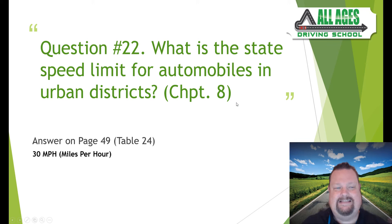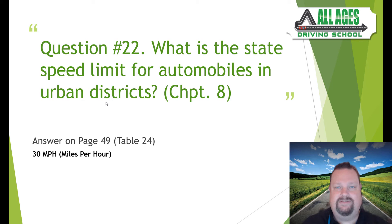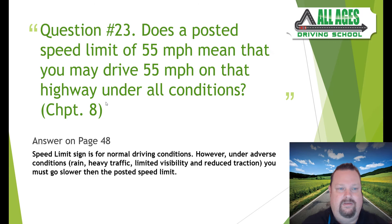Question number twenty-two: what is the state speed limit for automobiles in an urban district? Anytime you don't see a speed limit sign, there are still speed limits to follow. An urban district is within city limits and suburban neighborhoods. Without a posted sign, the default maximum on an urban street is 30 miles per hour. Found on page 49, table 24.